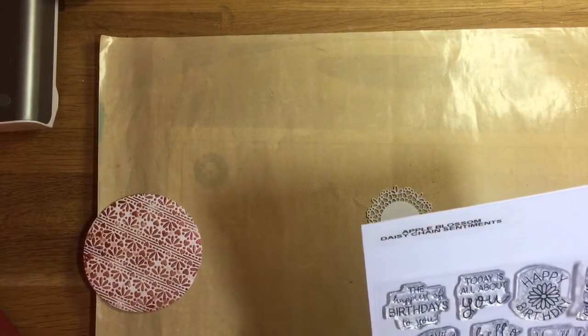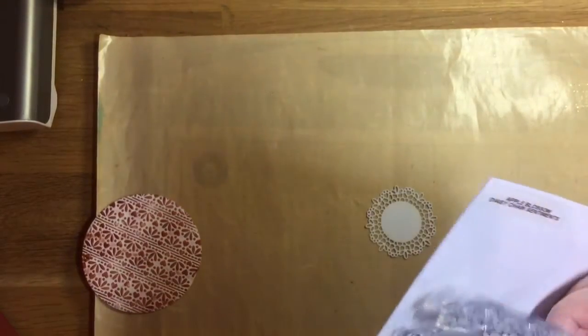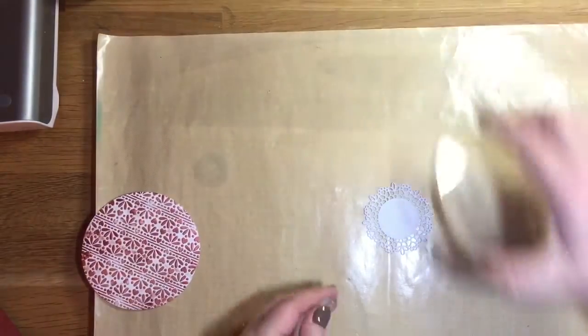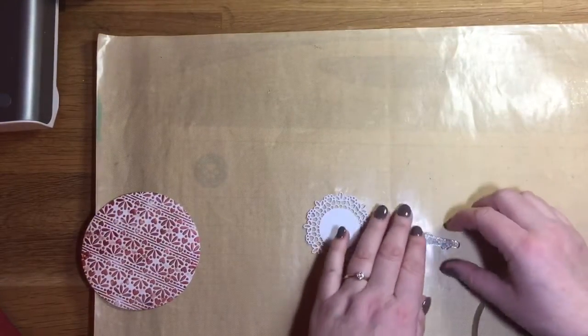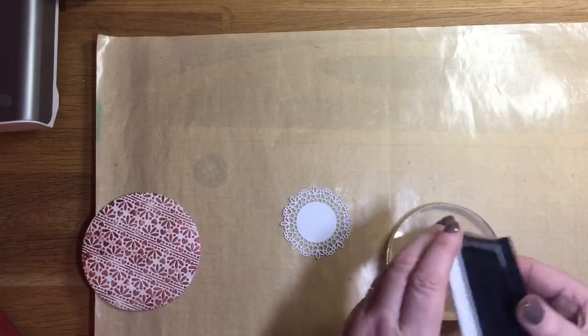We've got enough going on in the card without any more color or pattern, so I want this bit to be quite simple. I'm using the coordinating stamp set, which is the Daisy Chain Sentiment Set. This set is designed to go with these dies and all the sentiments will fit nicely within that doily.